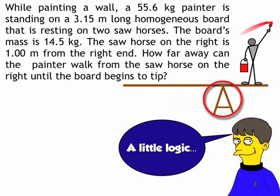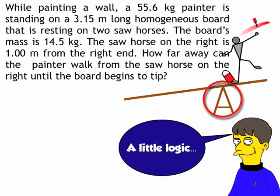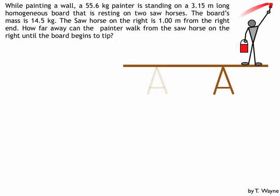You see, I want to know the location, the exact location where everything is balanced. If the painter takes one more step to the right, the beam's going to tip. If the painter takes one more step to the left, the beam's going to tip. So I'm at that perfect balance point where I don't need the left sawhorse. So I'm not going to look at that at all.